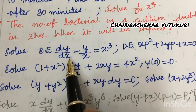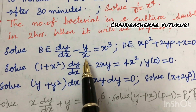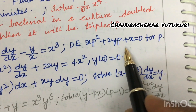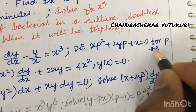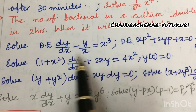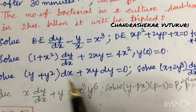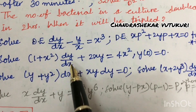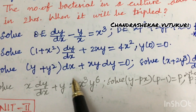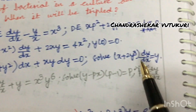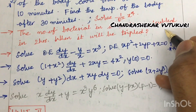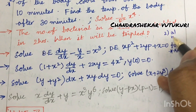Solve the differential equation dy/dx - y/x = x³. Also solve xp² + 2yp + x = 0 (where p = dy/dx) — this is said to be a very important gunshot question. Also solve differential equations involving partial differentiation with respect to y/x, and solve (y + y²)dx + xy dy = 0. These are very important for questions 2a and 2b.